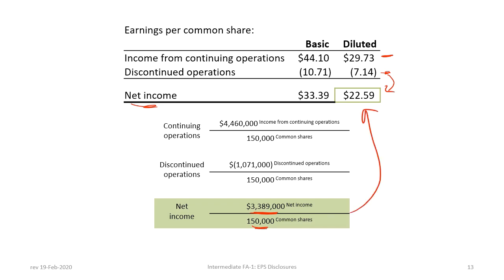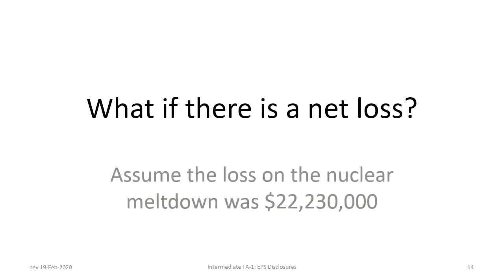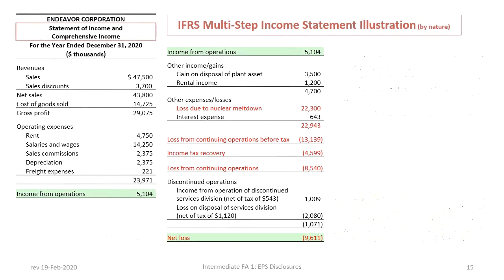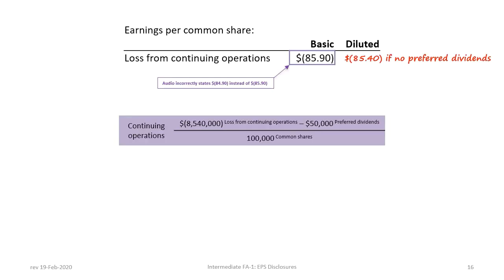Please ensure that you are comfortable with the calculations before proceeding. Recall from tutorial 1, we included a scenario where the company incurred a loss due to a nuclear meltdown. We will review the impacts of that loss on basic and diluted earnings per share. Here again is the presentation of the Statement of Comprehensive Income as presented in tutorial 1. EPS disclosures are required for IFRS only. In this case, there is a loss on continuing operations of $8,540,000.